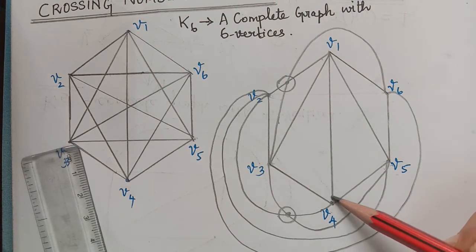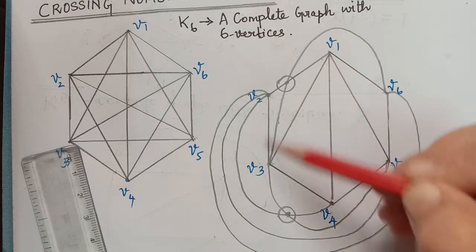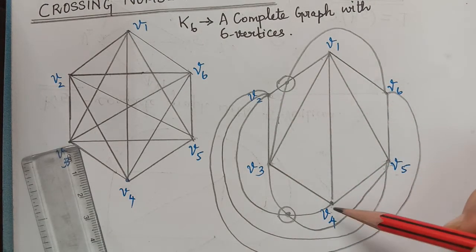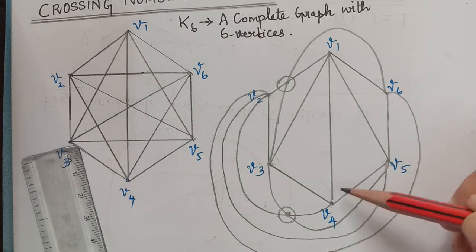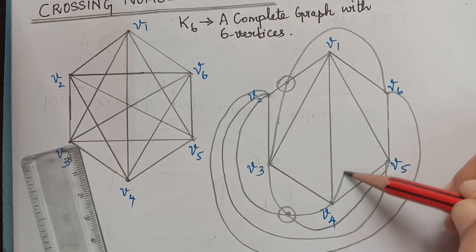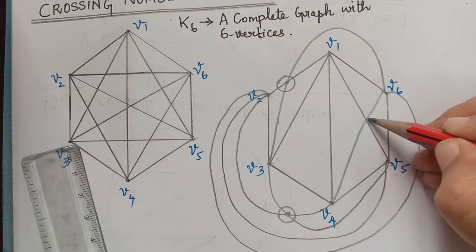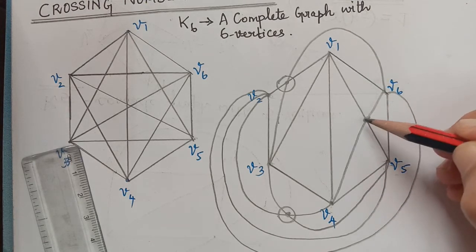From V4 now, already we have an edge with V1, V2, V3, and V5. So now we need to draw an edge between V4 and V6, which we have to draw in this way, and in that case there will be a crossing here.